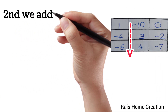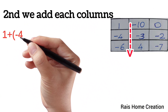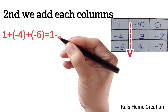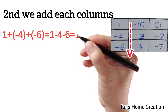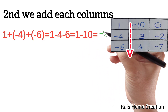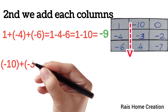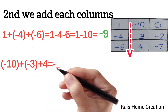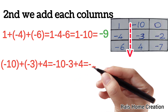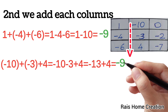Next, we add each column. 1 plus minus 4 plus minus 6 equal to 1 minus 4 minus 6 equal to 1 minus 10 equal to minus 9. Minus 10 plus minus 3 plus 4 equal to minus 10 minus 3 plus 4 equal to minus 13 plus 4 equal to minus 9.